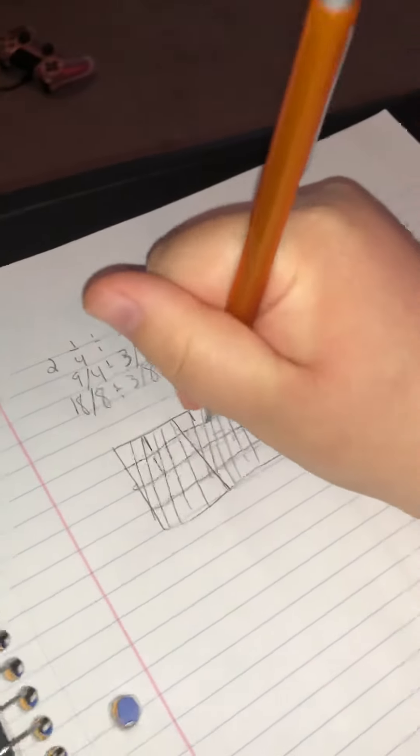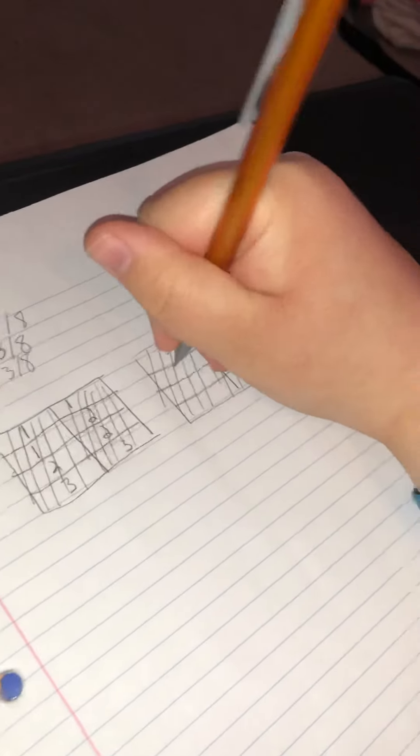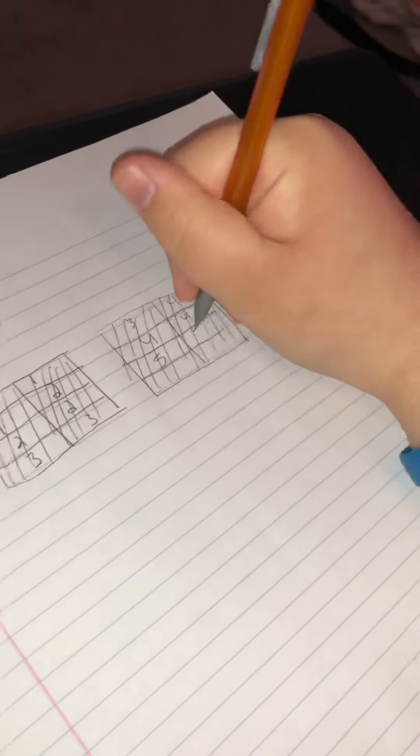And now we have 2, 2, 2. Group number 2. 3, 3, 3. Now we have group number 3. And we got 4, 4, 4. Group number 4. 5, 5, 5. Group number 5.